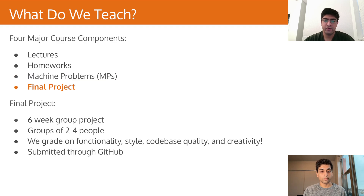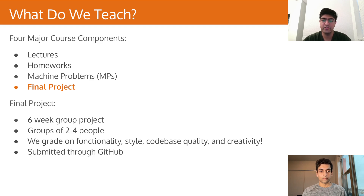Finally, we end the course with our final project. It is a six-week-long group project within groups of two to four people, and you're allowed to do whatever you want. You submit it through GitHub and you work with the TA to come up with your ideas. Projects are entirely unique and we often get some very interesting projects that reflect the people in the group. We grade purely on functionality, style, and code quality, so we're really looking for creativity to come out in these projects.